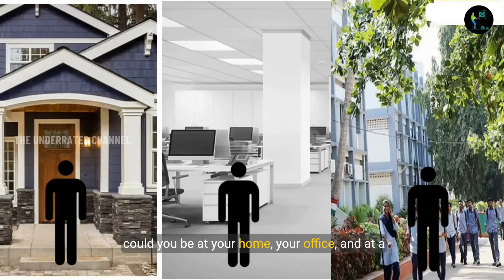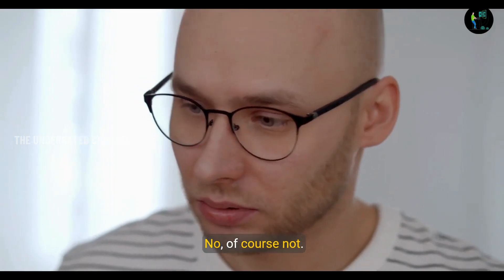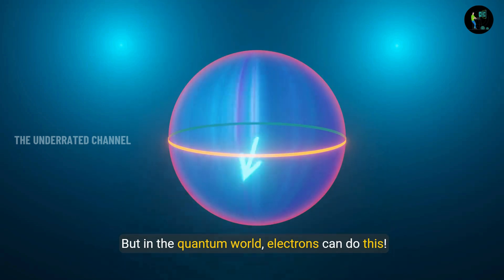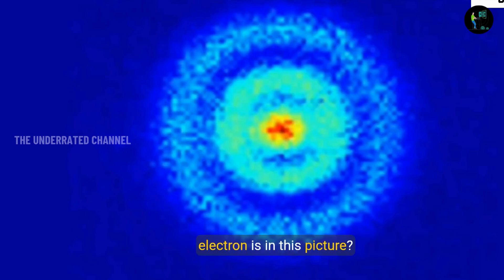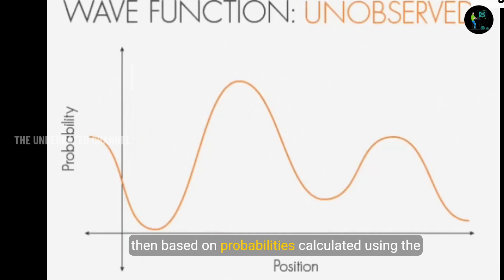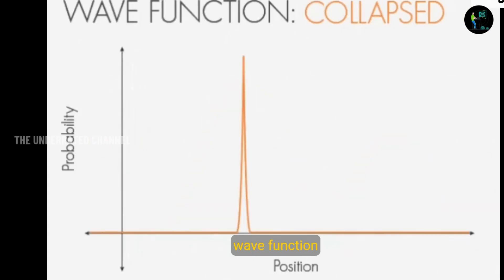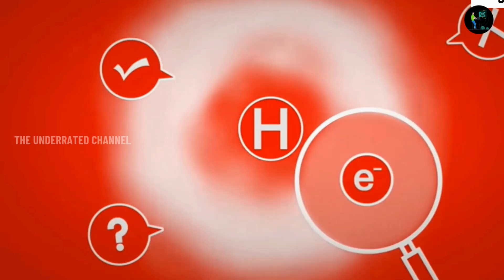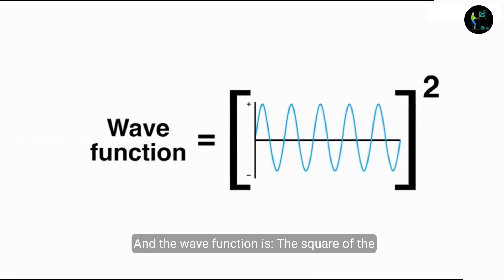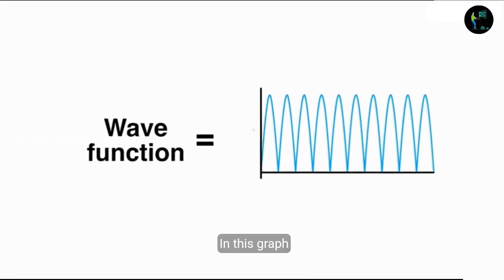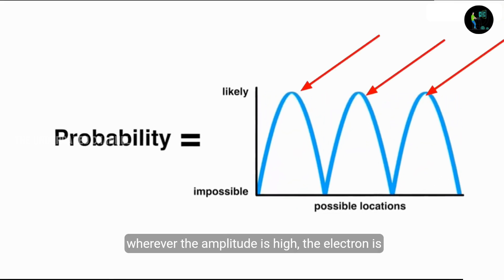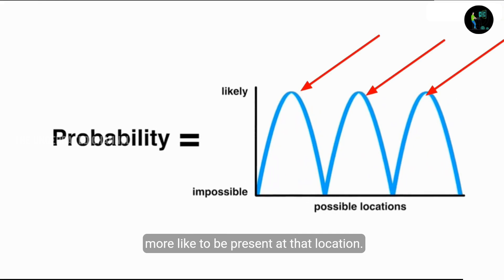Let me compare this with your real time. Could you be at your home, your office and at a restaurant all at once? No, of course not. But in the quantum world, electrons can do this. So if you ask me, hey buddy, but where exactly an electron is in this picture, then based on the probabilities calculated using the wave function, we can tell the electron could be in this location. And the wave function is the square of the amplitudes of the wave. In this graph, wherever the amplitude is high, the electron is more likely to be present at that location.